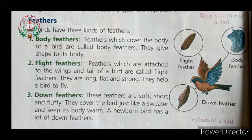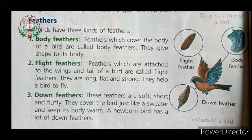The first one is body feathers. Feathers which cover the body of a bird are called body feathers — they give shape to its body. The second one is flight feathers. Feathers which are attached to the wings and tail of a bird are called flight feathers; they are long, flat, and strong, and they help a bird to fly. The third one is down feathers. These feathers are soft, short, and fluffy; they cover the bird just like a sweater and keep its body warm.